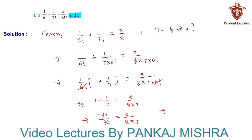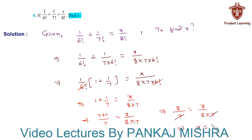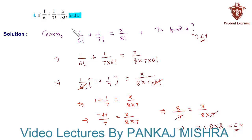This implies (7 + 1)/7 = 8/7 = x/(8 × 7). Cancelling 7 from both sides, x = 8 × 8 = 64. Hence x is equal to 64. This completes our solution.